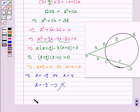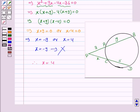We have x is equal to 4. Therefore, PC is 4 centimeters.